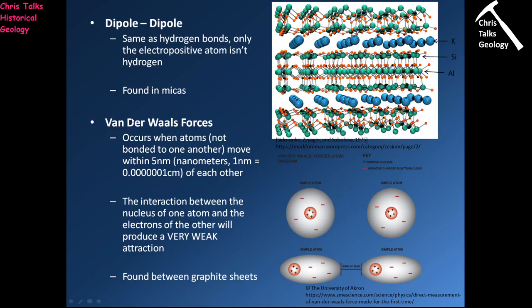When you take a pencil — pencil lead is made from graphite — and drag it across paper, the force of moving the pencil over the paper literally rips the graphite apart along the planes of weakness between sheets. It fails along those planes because Van der Waals forces represent a natural weakness. So hydrogen bonds, dipole-dipole, and Van der Waals intermolecular forces typically produce planes of weakness along which a mineral preferentially splits, and are quite important in affecting how a mineral behaves at a macro scale.